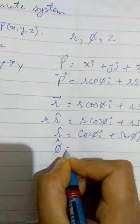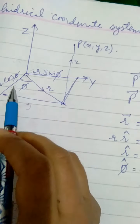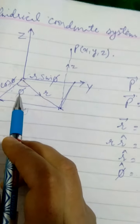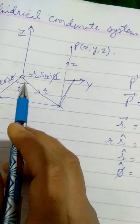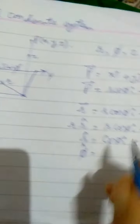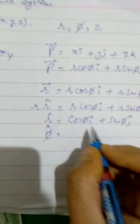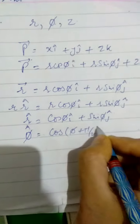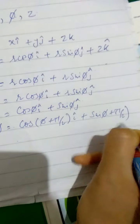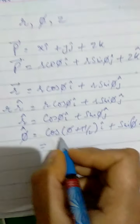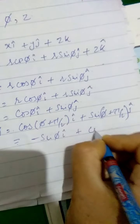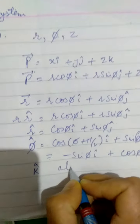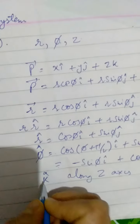Phi-cap by concept will be pointing along the direction of increasing phi from x to y, and it will be leading r by 90 degrees in the plane. Therefore, wherever you find phi in the r expression, you replace it by phi plus pi/2 in the phi-cap expression. So phi-cap will be cos(phi + pi/2) i plus sin(phi + pi/2) j, which simplifies to minus sin phi i plus cos phi j. And k-cap is simply the unit vector along the z-axis, the same as in Cartesian coordinates.